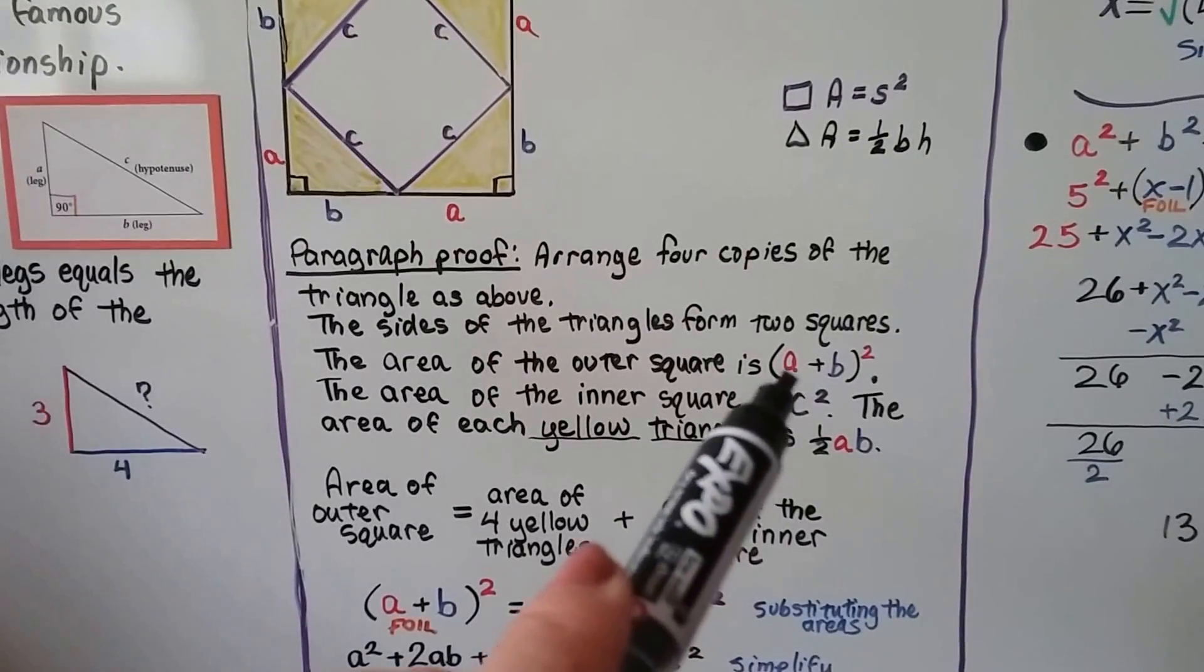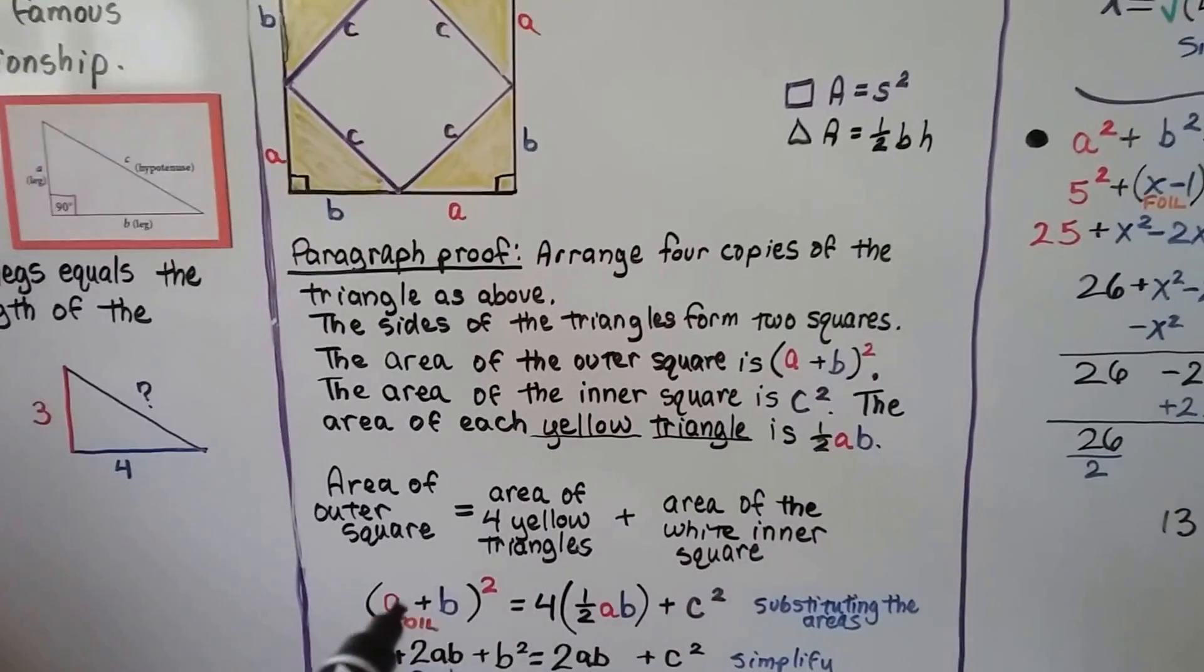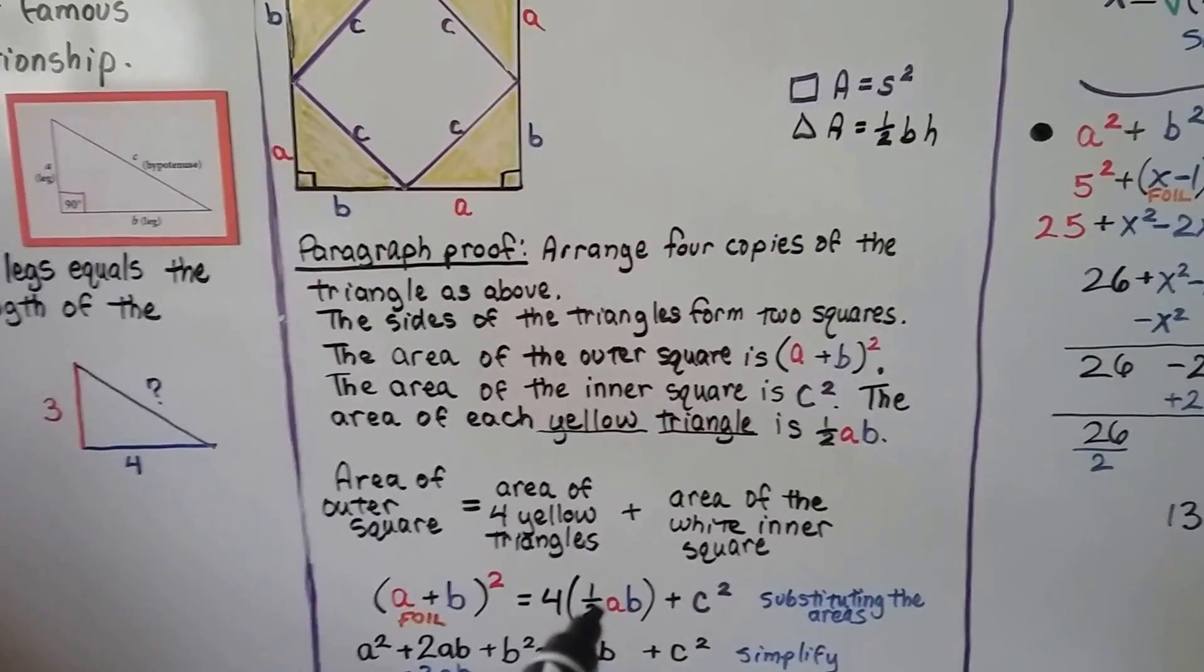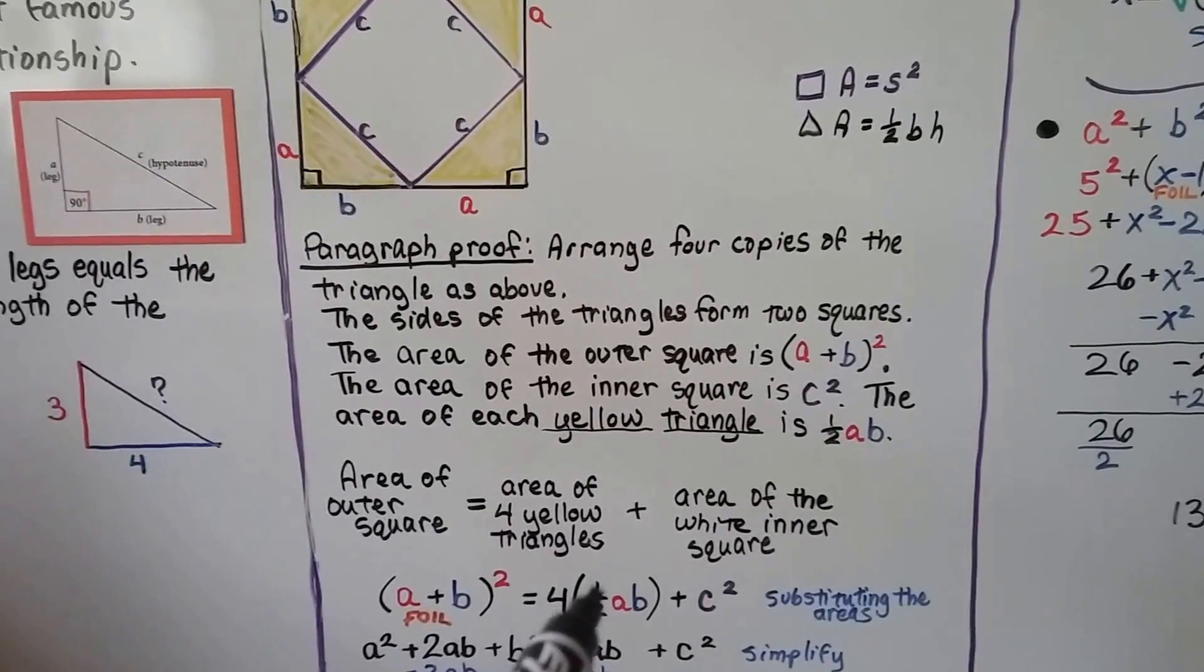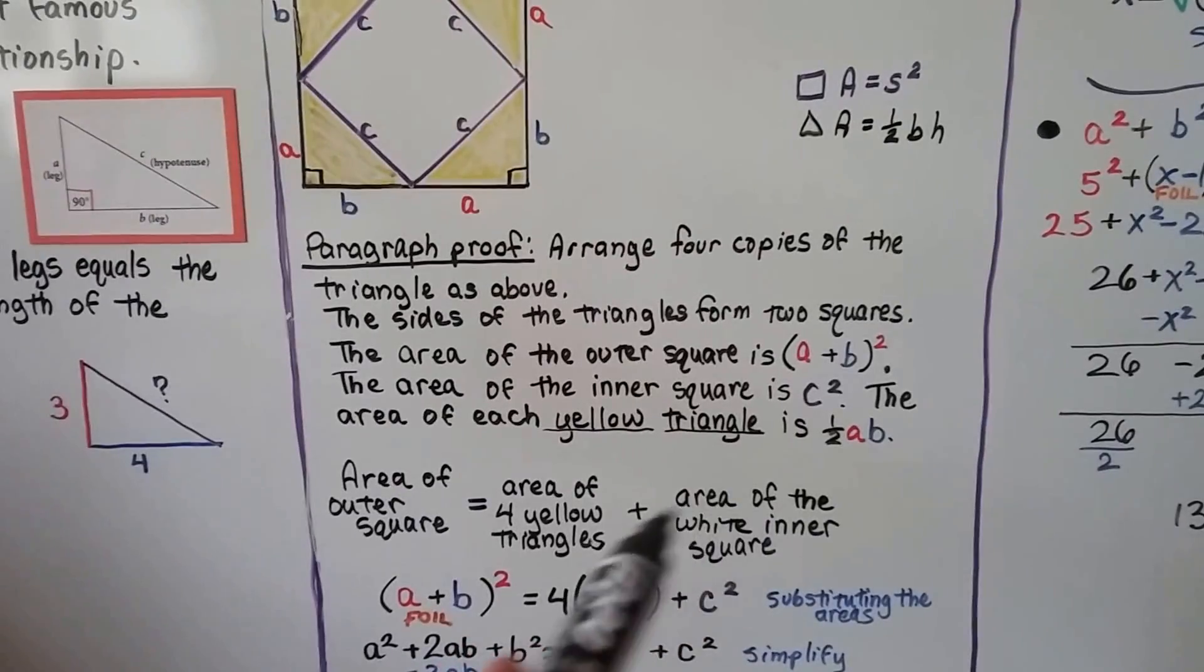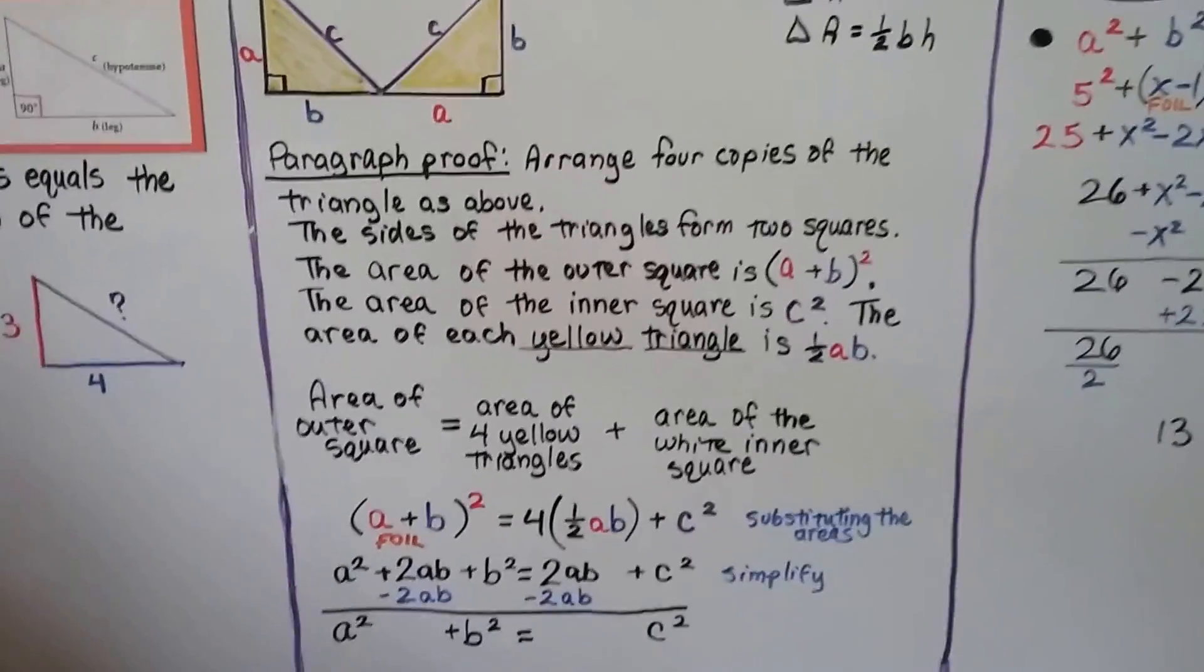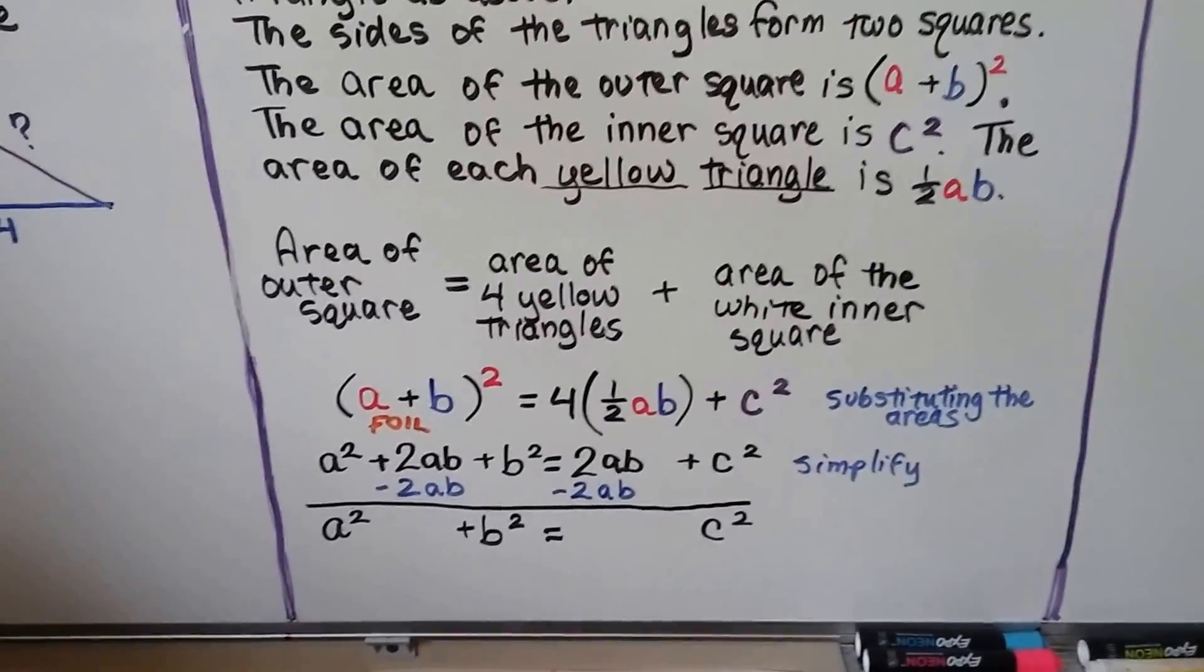And the area of the outer square, we already determined this, that it's a plus b squared. And that's going to equal the area of the four yellow triangles. Well, if each one is half ab, then four of them is four times half ab. And we add the area of the white inner square. That's c squared. So we've substituted all the areas in. We've got our equation.